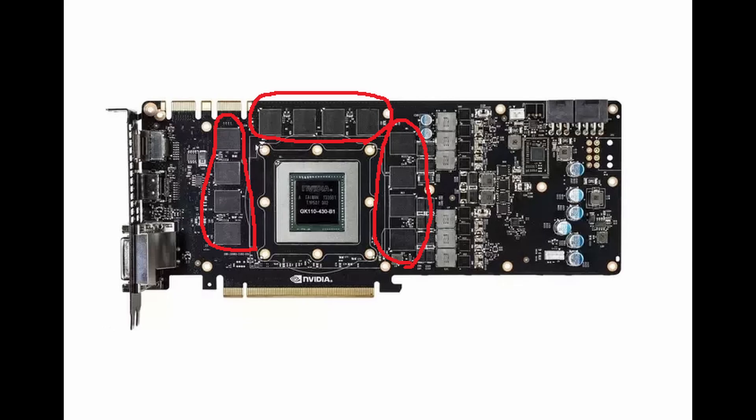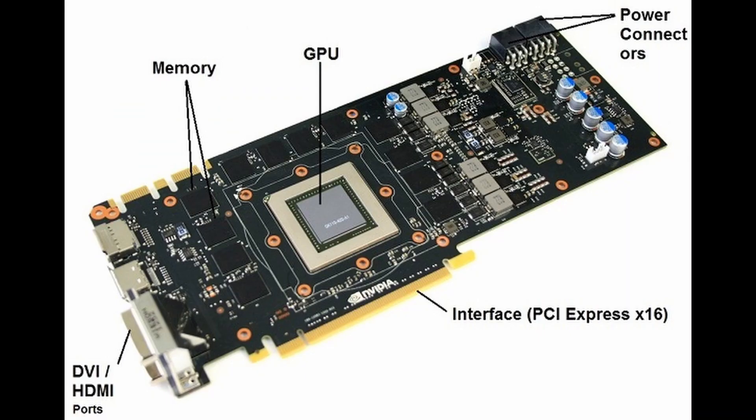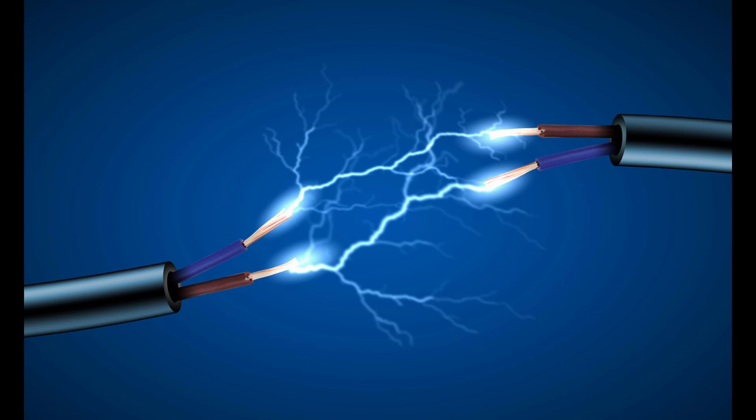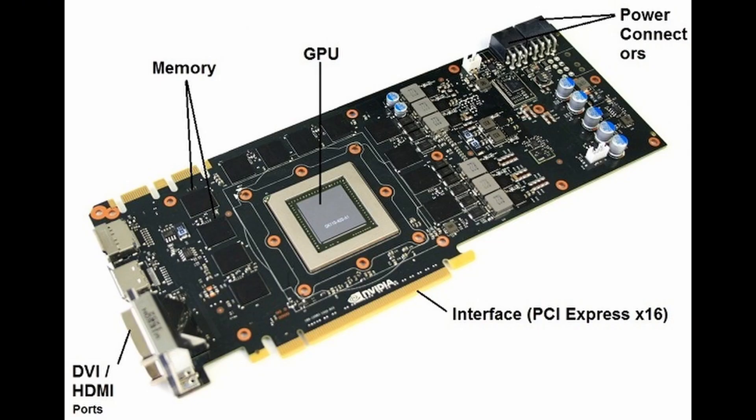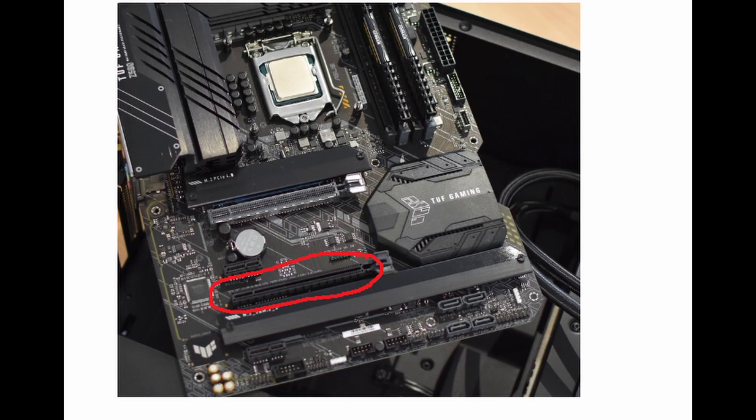The motherboard of the graphics card works kind of like an ordinary motherboard. It provides electricity to all the parts in the graphics card and is used to link all the different pieces together. The graphics card motherboard is connected to the whole computer's motherboard, and like all other parts of the computer, it communicates to different parts through the motherboard.